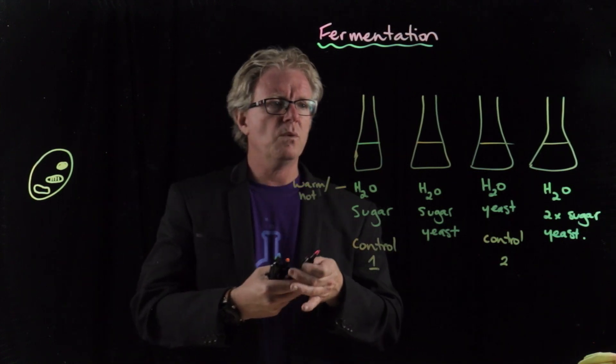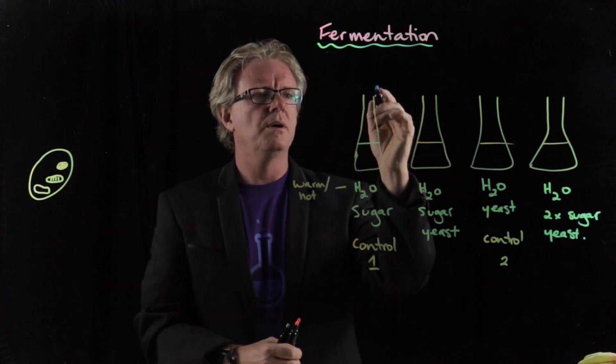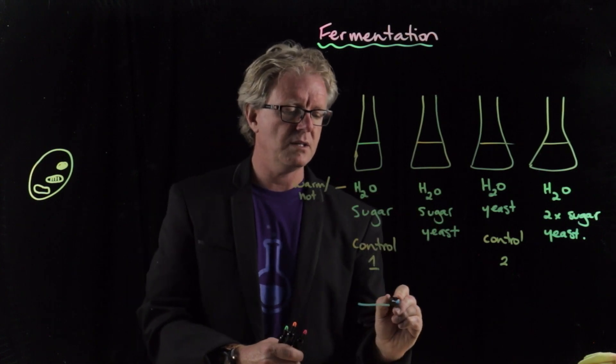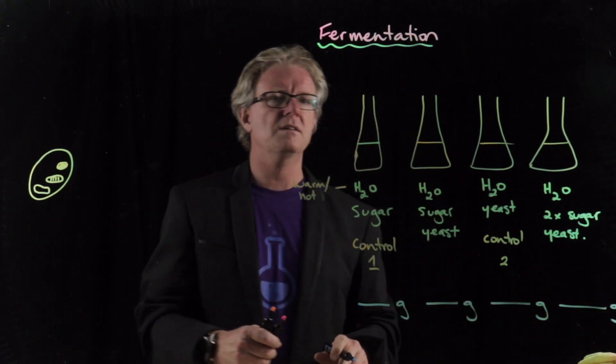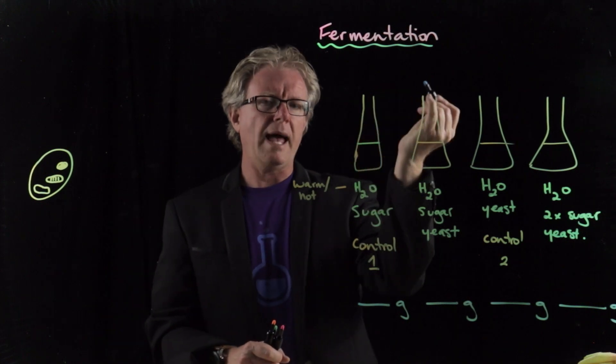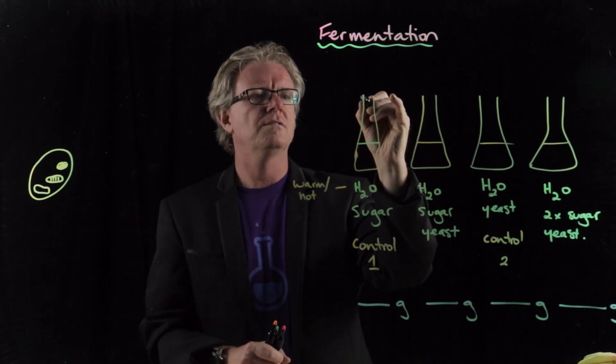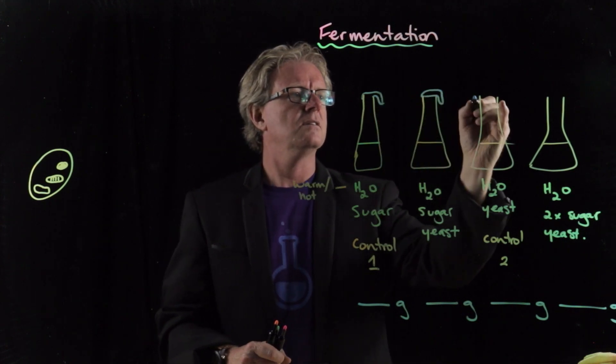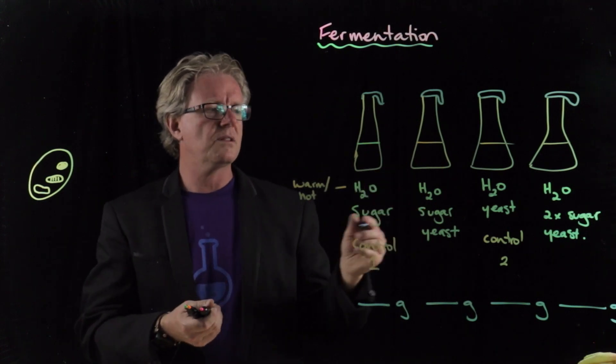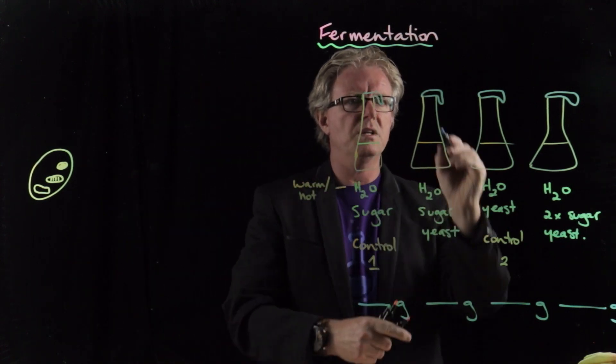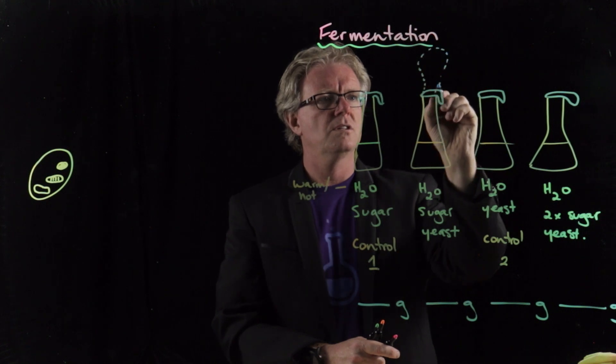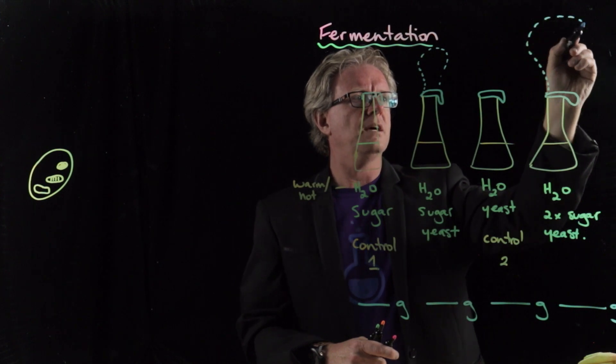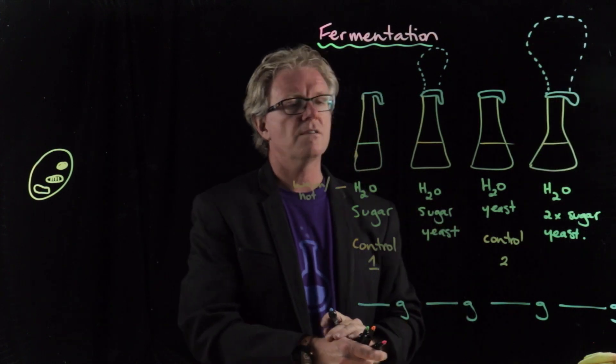Okay. And then what we're going to do is we're going to place balloons on the top. Well, we'll measure the mass first. Okay. We'll measure the mass first. So we'll get a mass reading. All right. We'll measure the mass reading of all of them. Then we'll put a balloon on just to capture the CO2, just for fun. All right. So we'll put a balloon on. It's going to overhang the top there. It looks like Santa's little hat. Okay. And we would expect that within this one here, that should start to produce some gas. And then since it's got twice the sugar, it would make sense if it made twice the volume of gas.